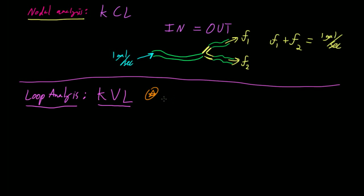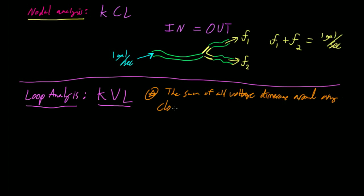We'll talk about it more and give a real-world example. What Kirchhoff's voltage law says is that the sum of all voltage differences around any closed loop in a circuit must be zero. Any closed loop — and we'll definitely see examples of what we mean by a closed loop in a circuit.